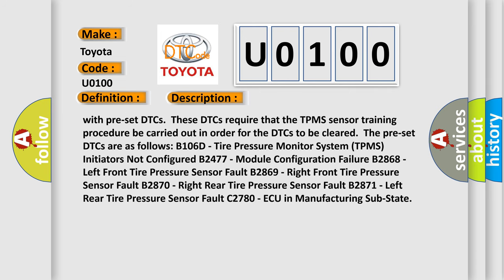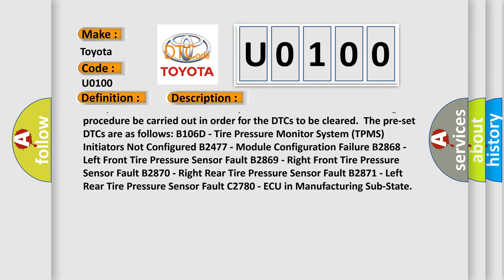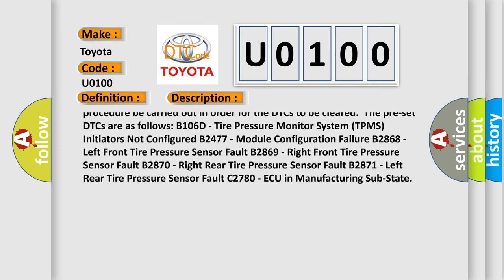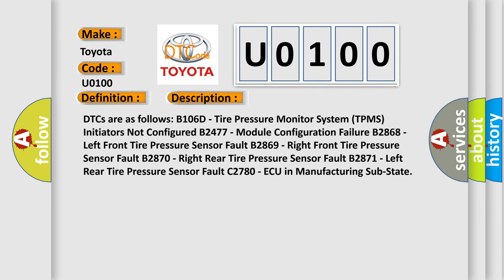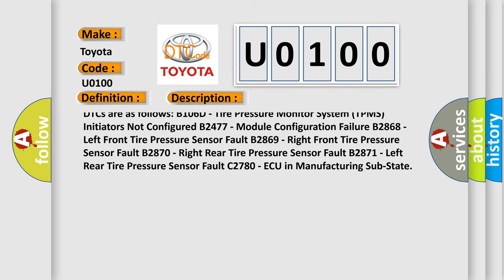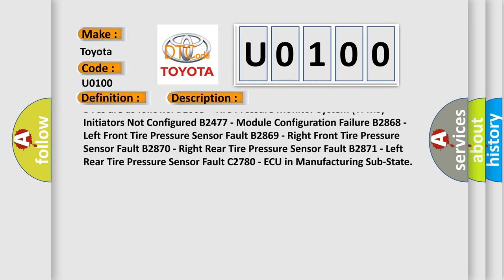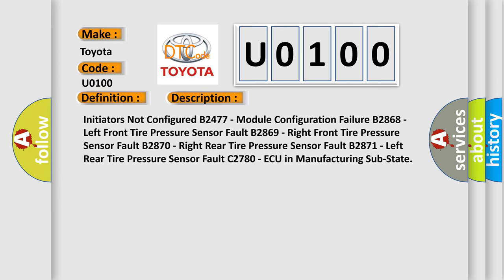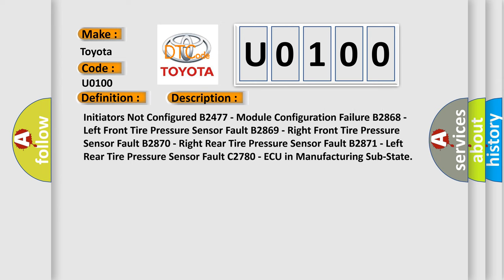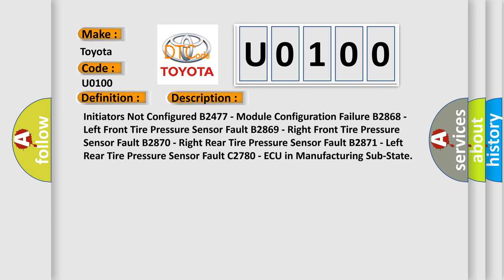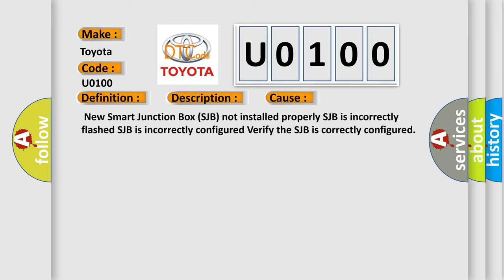These DTCs require that the TPMS sensor training procedure be carried out in order for the DTCs to be cleared. The preset DTCs are as follows: B106D - TPMS initiators not configured; B2477 - module configuration failure; B2868 - left front tire pressure sensor fault; B2869 - right front tire pressure sensor fault; B2870 - right rear tire pressure sensor fault; B2871 - left rear tire pressure sensor fault; C2780AQ - in manufacturing sub-state. This diagnostic error occurs most often when: a new SJB is not installed properly, the SJB is incorrectly flashed, or the SJB is incorrectly configured.